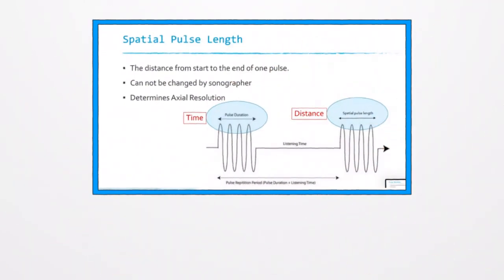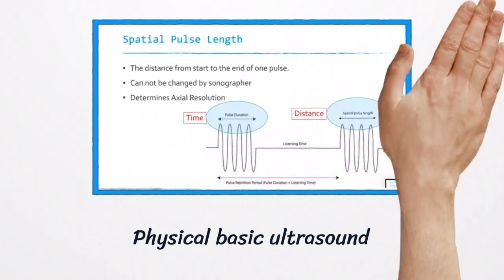Pulsed ultrasound is a diagnosis of imaging short pulses. And this has two components. Pulsed ultrasound is the transmitted time and the received time. And it depends on parameters like pulse duration and spatial.